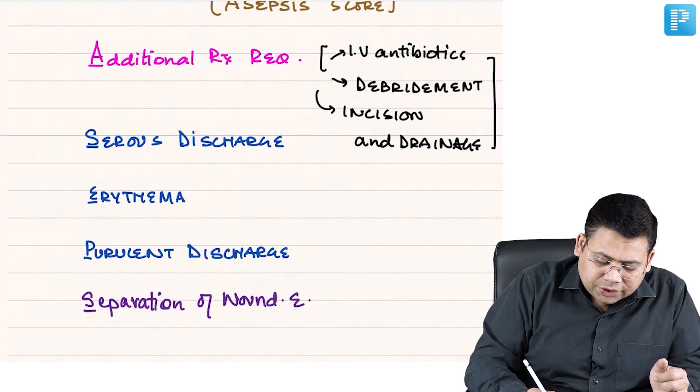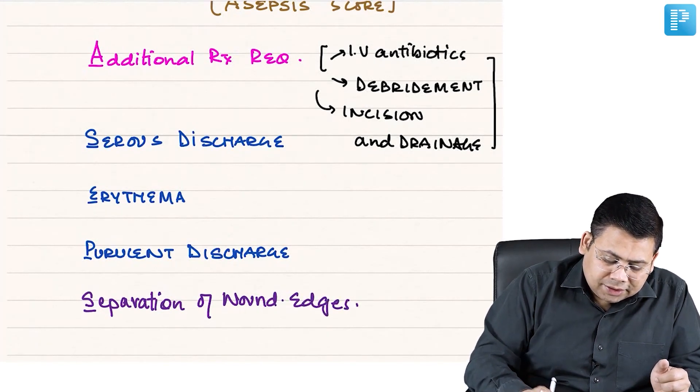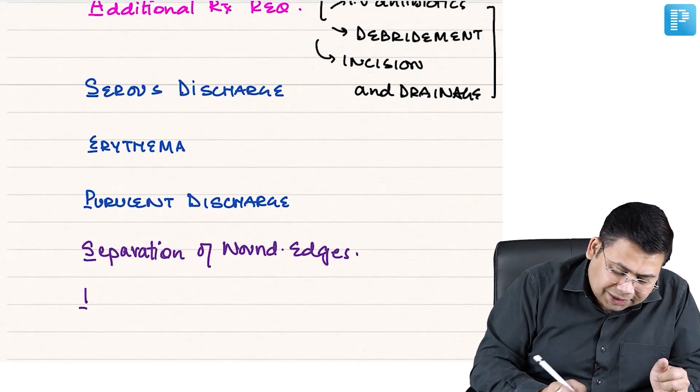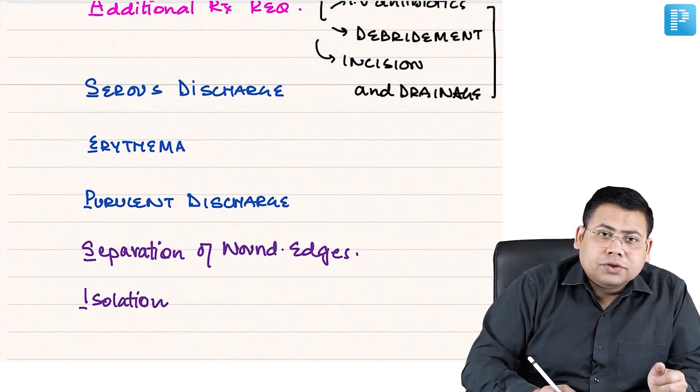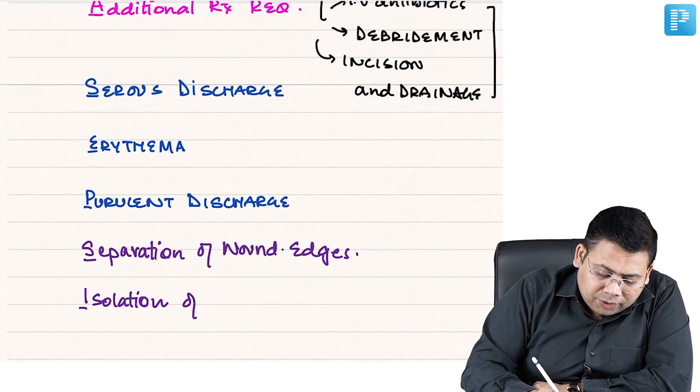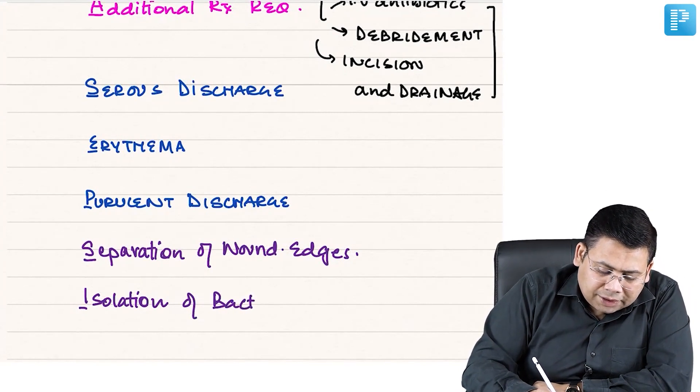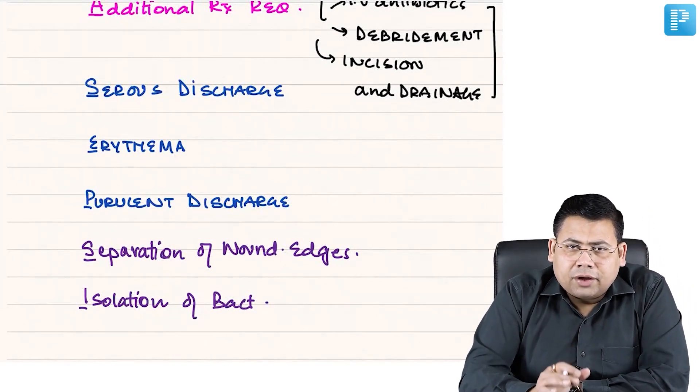I stands for isolation of bacteria. What do you mean by isolation of bacteria? It is a culture that we require - we have taken out culture. So isolation of bacteria.